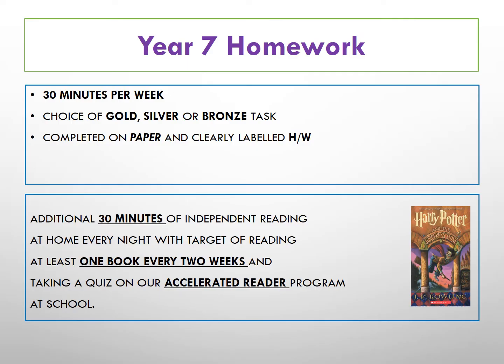Year 7 students are expected to spend 30 minutes each week on their English homework. They will have the option of three tasks varying in difficulty: bronze, silver and gold. This will be available for them to see on Show My Homework. Students are encouraged to pick a task that challenges them. This should be completed on paper and handed in to their teacher. Students are also expected to read at least one book per fortnight and take a quiz on that book on the Accelerated Reader programme.